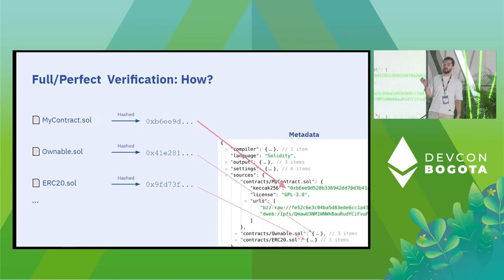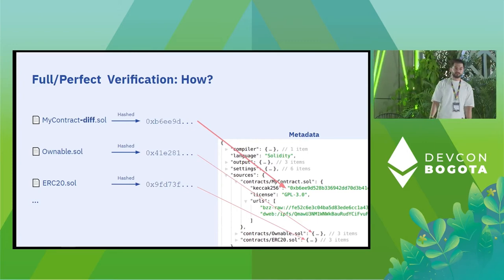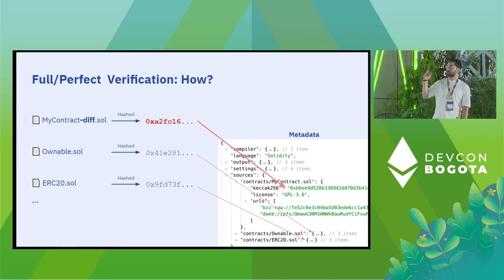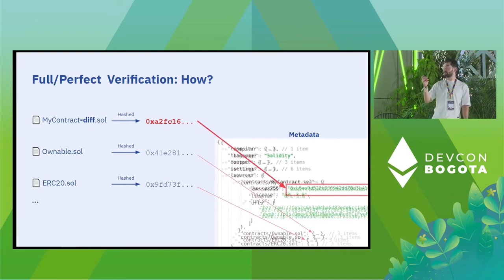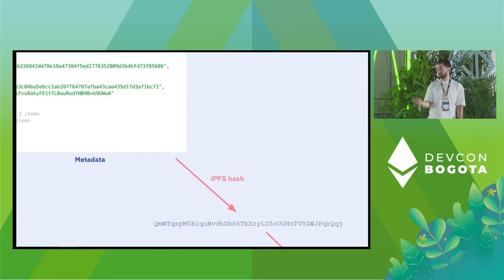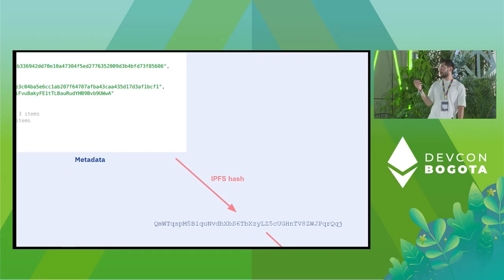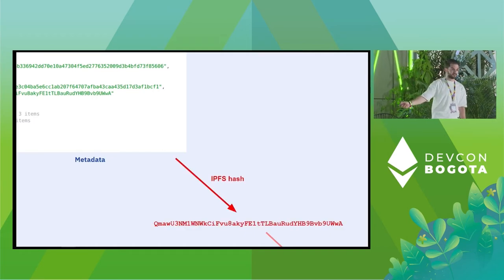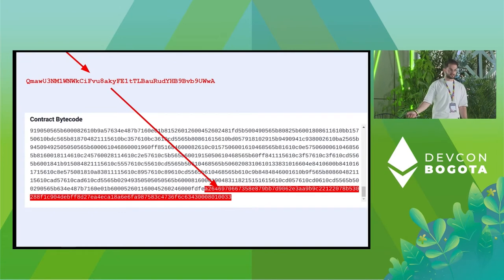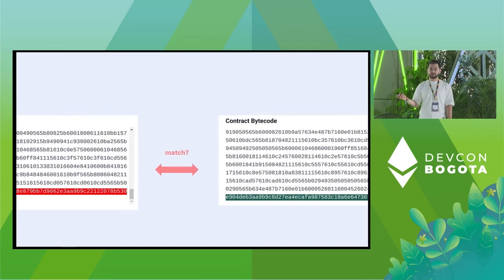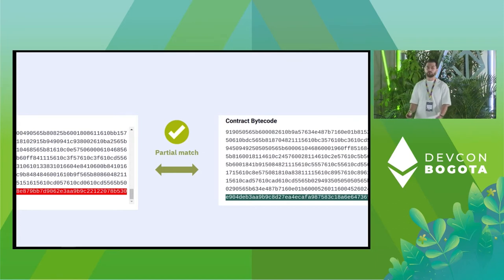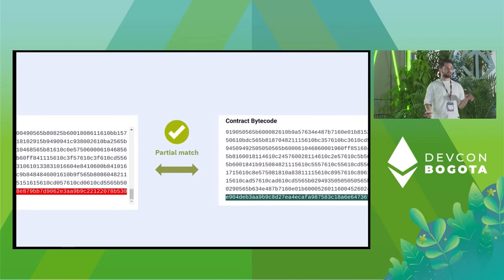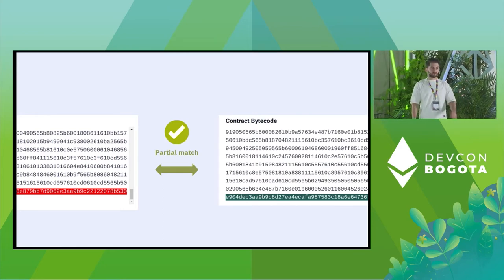When you make a slight change — change a space, a variable name, any comment — the hash of the file will change. Then the hash inside the metadata will change. In turn, the hash of the metadata file itself will change, so the embedded field will be different, meaning this will not be a full match, but it will be a partial match, assuming you didn't change the functionality of the contract.